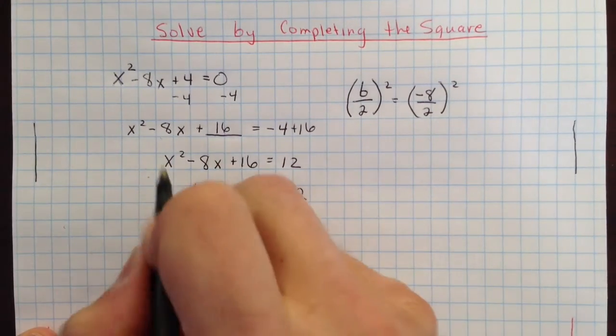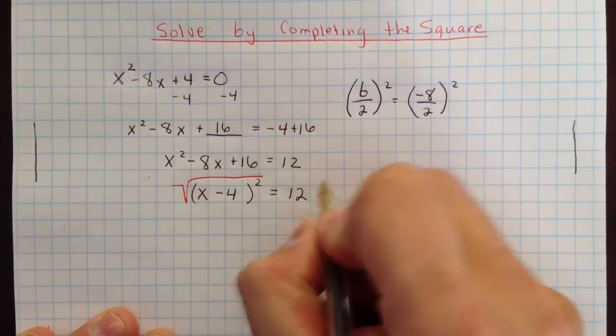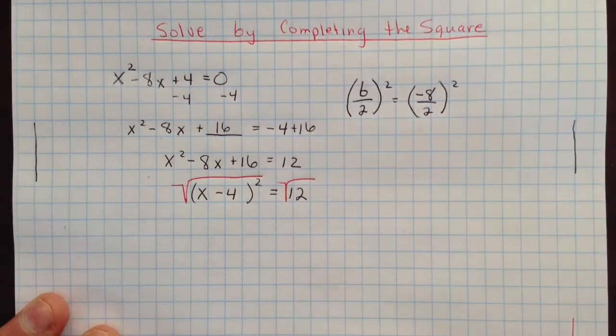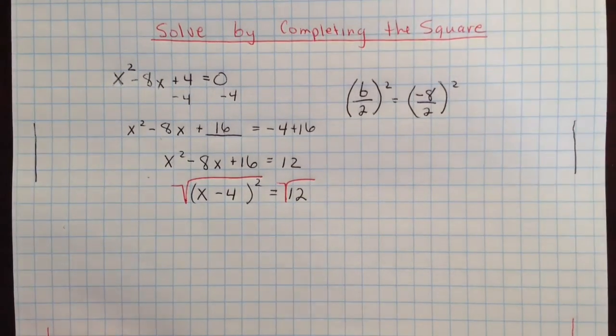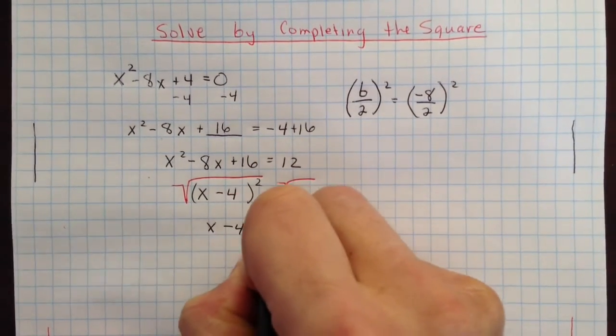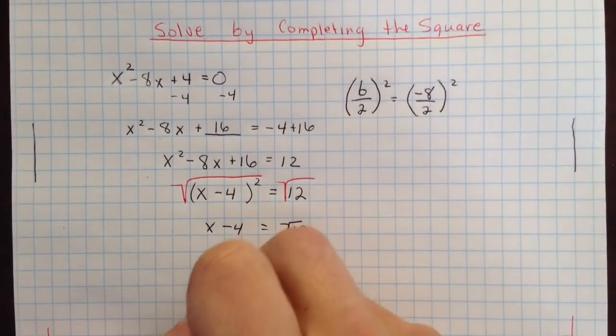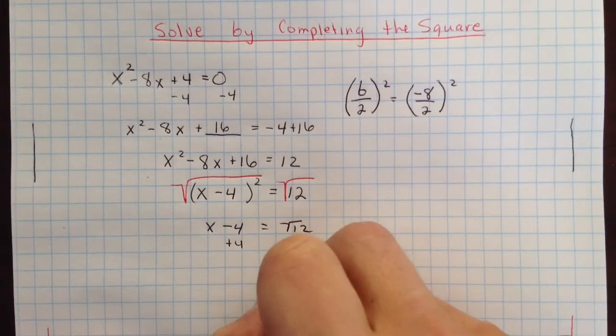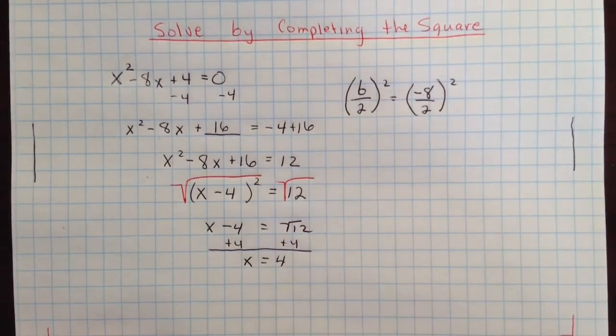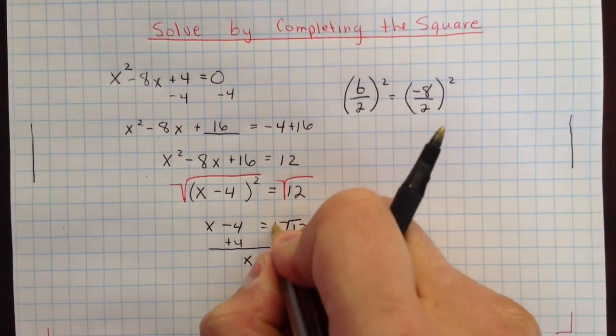Now we use the square root property to take the square root of both sides. 12 is not a perfect square, so we're going to just go ahead and save that until the end and put it in the calculator. This comes out as x minus 4 equals the square root of 12. And then from there we add 4 to both sides to get x equals 4. And remember, this really is a plus and minus here. It's important to remember that step.